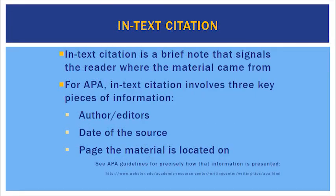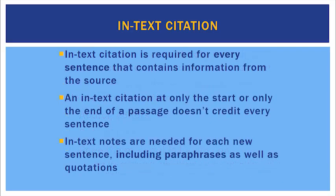In-text citation is a brief note that signals the reader where the material came from. For APA, in-text citation involves three key pieces of information: first, the author or the editors; second, the date of the source; and third, the page that the material is located on. In-text citation is required for every sentence that contains information from the source. An in-text citation at only the start or only the end of a passage doesn't credit every sentence. In-text notes are needed for each new sentence, including paraphrases as well as quotations.